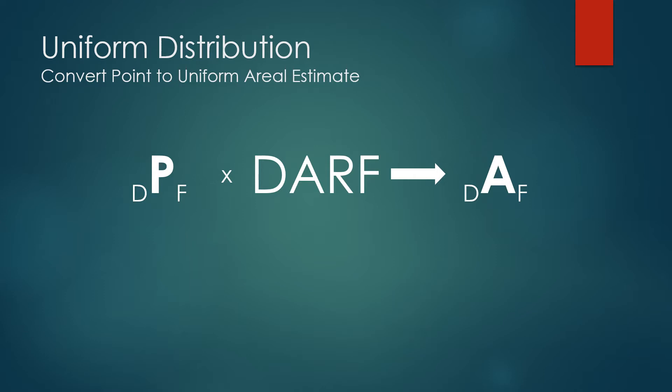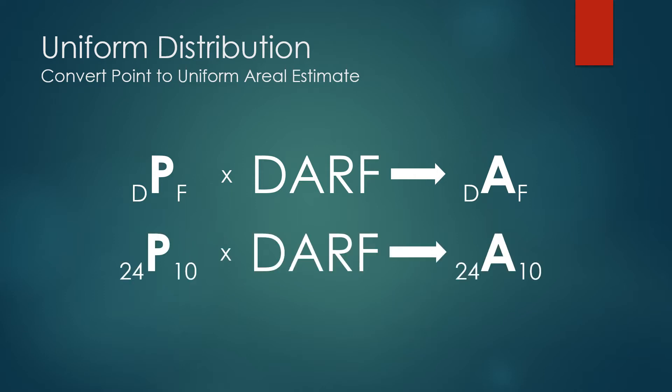But now I've created a problem. I have a point estimate of a given duration and frequency, but now I'm applying it as an average over an area. Are those two numbers the same? The short answer is no. The areal estimate on average is always less than the point peak. The idea is to take your point estimate of a given duration and frequency and derive the areal estimate for the same duration and frequency using a factor called the depth area reduction factor. I multiply my point estimate by this factor, and that yields an areal estimate at the same duration and frequency.